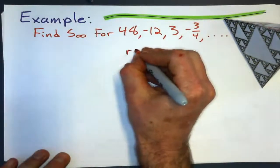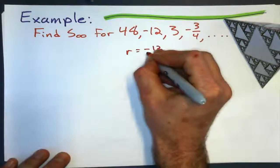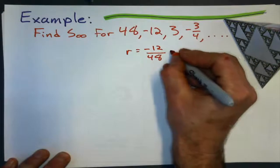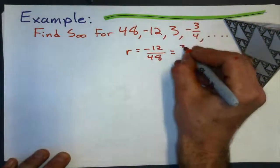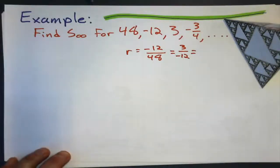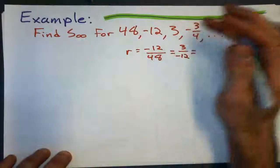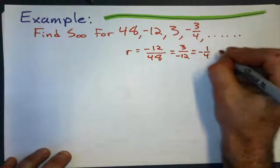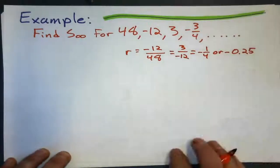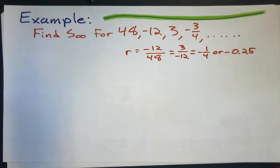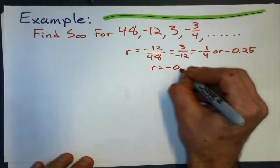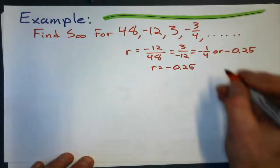And let's see, does it have a common ratio? Let's see, negative 12 divided by 48, is that going to be the same as 3 divided by negative 12? I think it is. And I think we get negative 1 quarter. Well, we can write that as a decimal. So check. Our common ratio is negative 1 quarter.